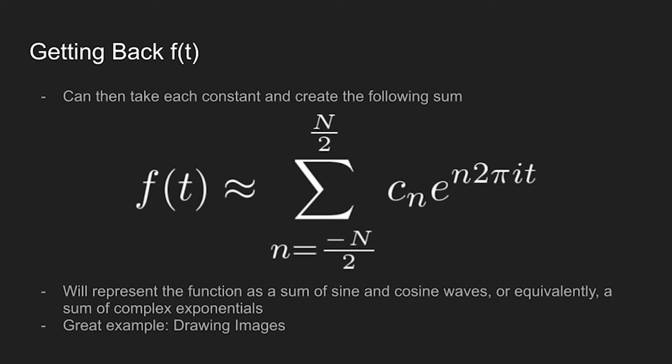We then take that sum from all of the negative frequencies and all of the positive frequencies, which is why you can see that we have negative N over 2 and positive N over 2. And when we take that, that will give us a good estimation of our original function of time.